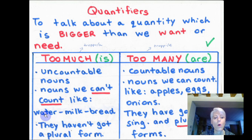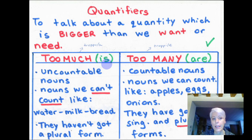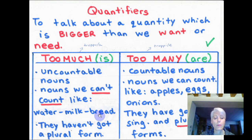Water, milk and bread are uncountable, and I use the verb in the singular form: 'is'. Remember, we learned: there is some water, there is some milk, there is some bread.